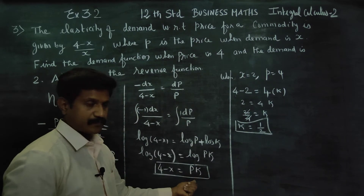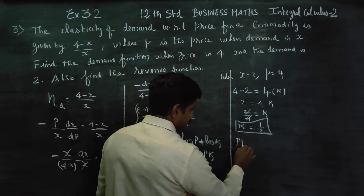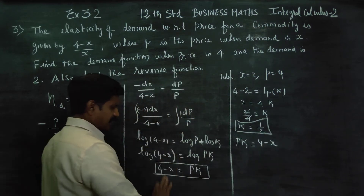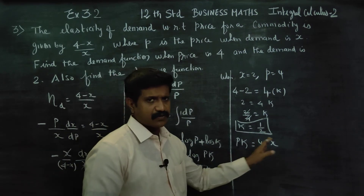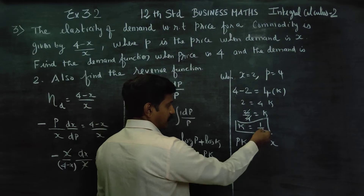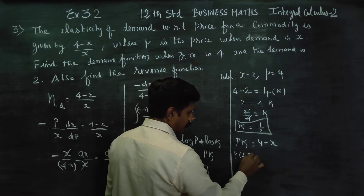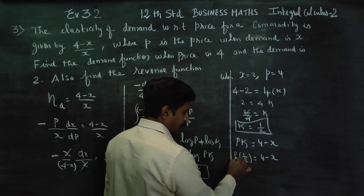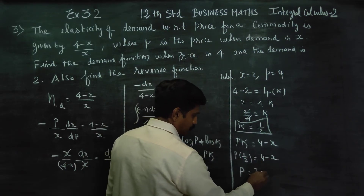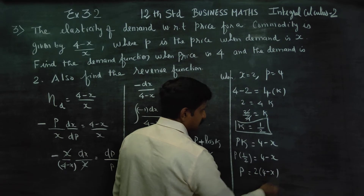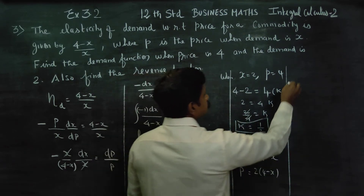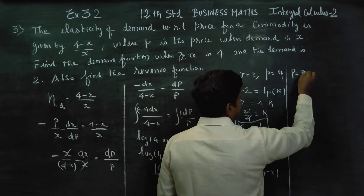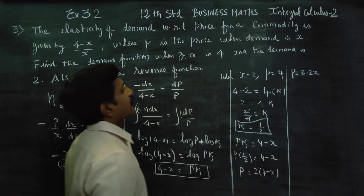Now k is ready. That would be the end of the process. p times k is equal to 4 minus x, so 4 minus x equals p times k. With k equal to 1 by 2: cross-multiplying, p is equal to 2 into (4 minus x), which gives p equals 8 minus 2x.